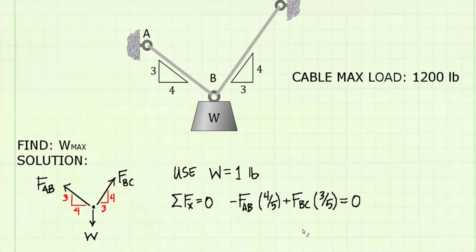I'm going to have these same two unknowns in my y-direction equilibrium equation. So I'm planning on doing a substitution. I will solve for variable FBC in terms of FAB.